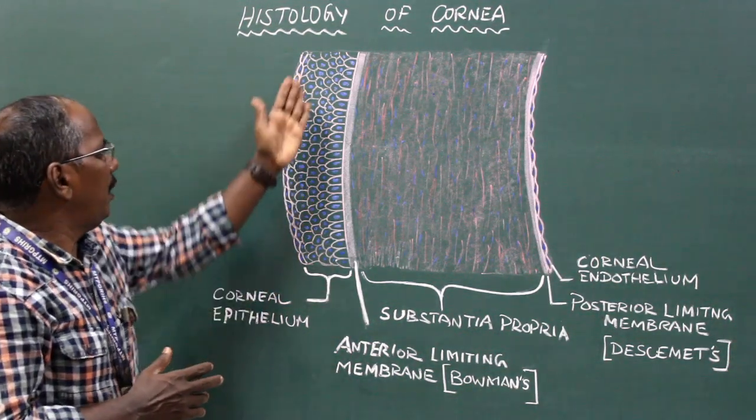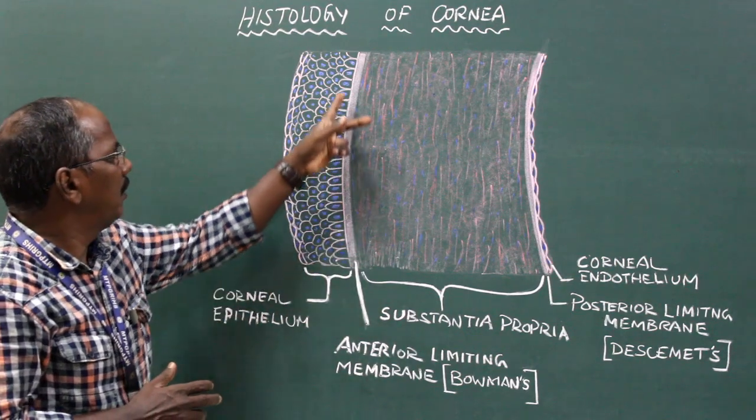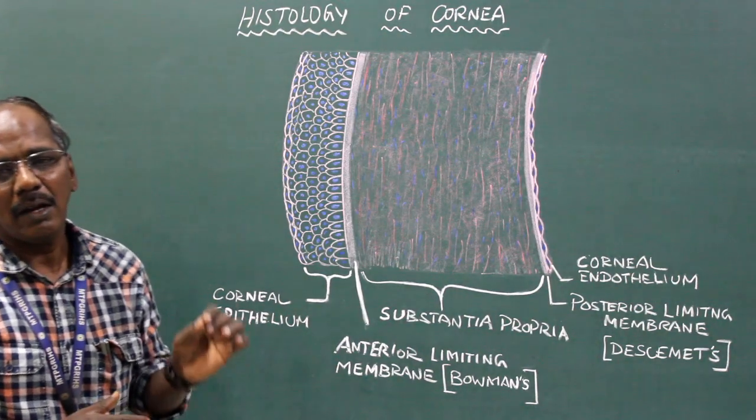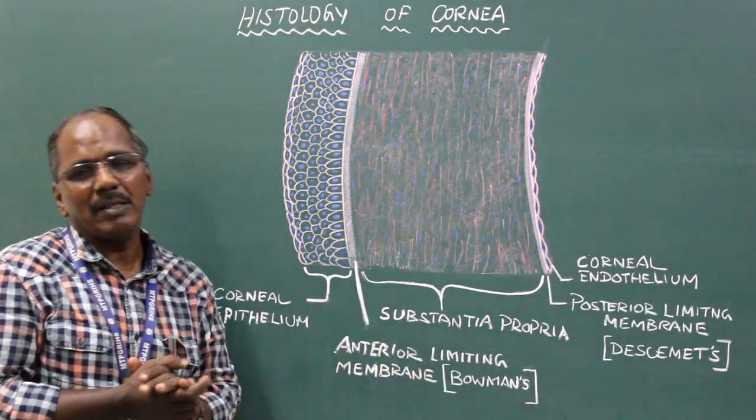The corneal epithelium rests on an anterior limiting membrane or lamina. It is also known as Bowman's membrane.